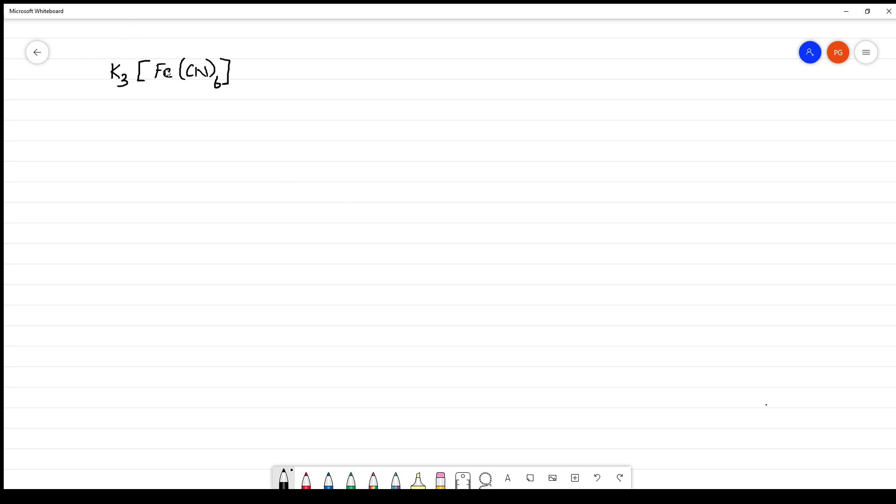You have to name K3Fe(CN)6. The first step is you have to identify this. The first will always be a cation. So this is cation, and inside the square bracket, this is an anion. So totally this is an anionic complex.